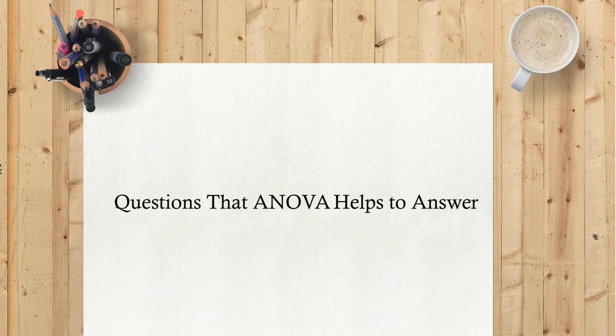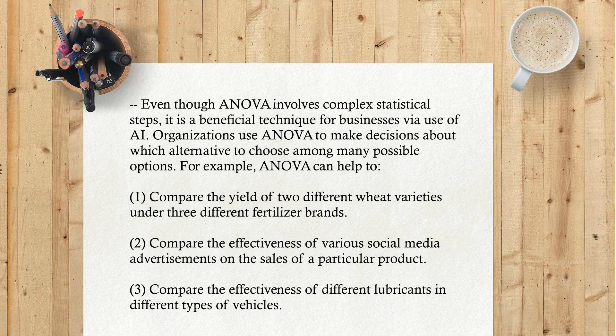Questions that ANOVA helps to answer. Even though ANOVA involves complex statistical steps, it is a beneficial technique for businesses via use of AI. Organizations use ANOVA to make decisions about which alternative to choose among many possible options. For example, ANOVA can help to: 1. Compare the yield of two different wheat varieties under three different fertilizer brands. 2. Compare the effectiveness of various social media advertisements on the sales of a particular product. 3. Compare the effectiveness of different lubricants in different types of vehicles.